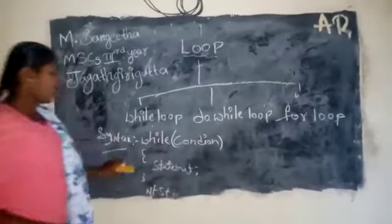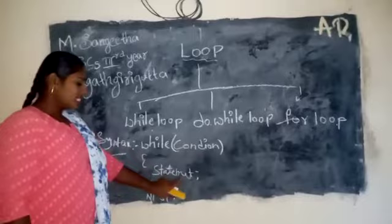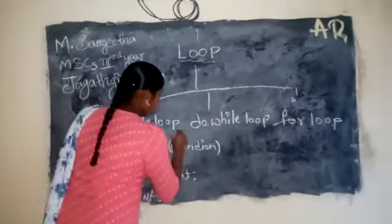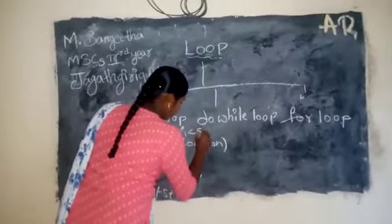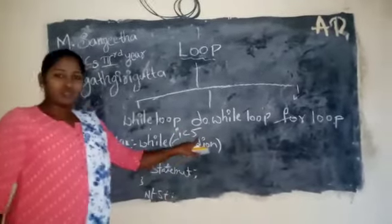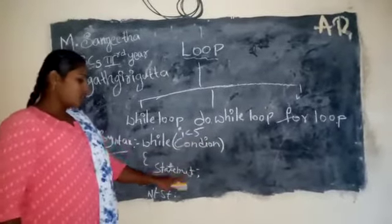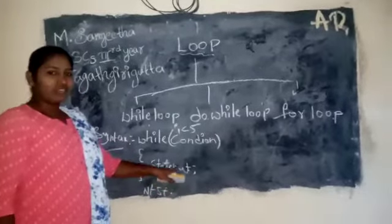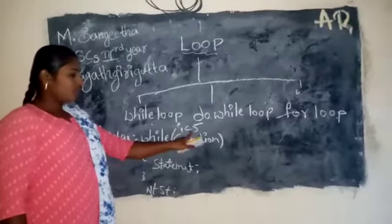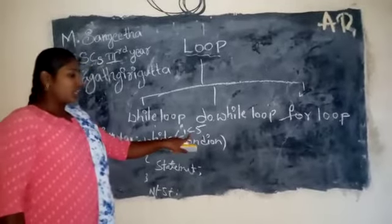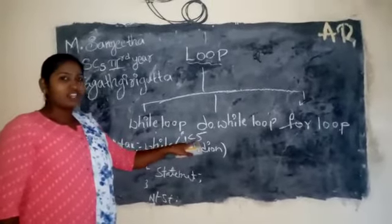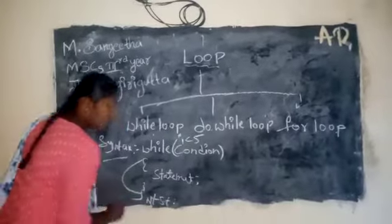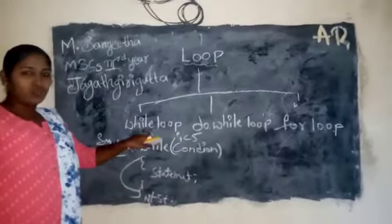This is the syntax for the while loop: while condition, statement, and out of loop. If we take the condition i less than or equal to 5 — if the condition is true, we will go to the statement and print it. Again, it comes back to the condition. Until the condition is false. If the condition is false, it comes out of the loop. This is called a while loop.